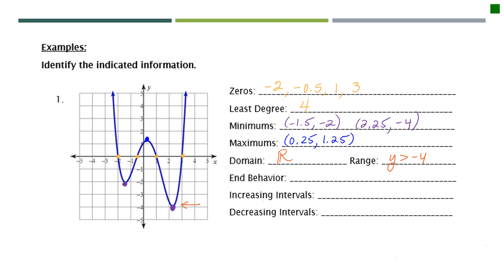For end behavior, we use infinities again. As x goes to infinity, meaning x goes to the right, my roller coaster car would eventually go up to positive infinity. As x goes to the left, it temporarily goes down, but then continues up forever toward positive infinity. So both y values are going towards infinity.